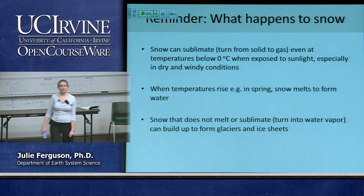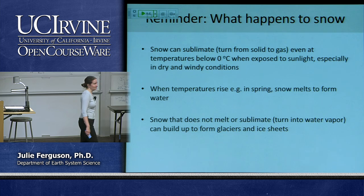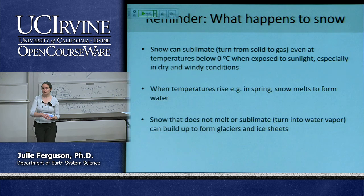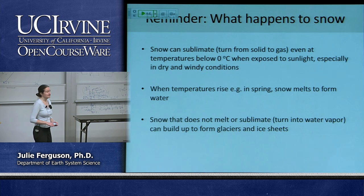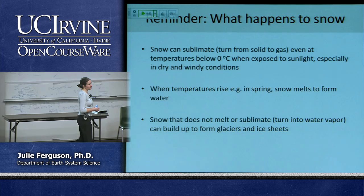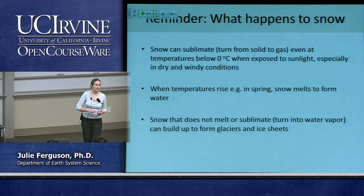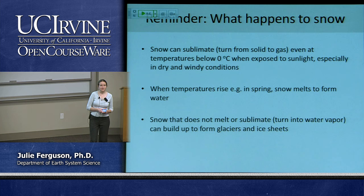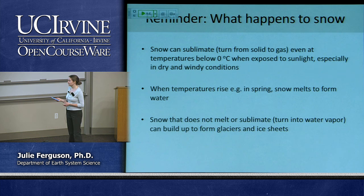As a reminder, we're going back to thinking about snow. If you want to build up land ice, it comes from piling up snow. Snow can sublimate — go from solid to gas — even below zero degrees Celsius, especially exposed to sunlight. When temperatures rise, much of the snow melts. But if it is cold enough and there is enough snow, some can stick around through summer. If that happens year after year for hundreds or thousands of years, we can build up big thicknesses of ice and start forming glaciers.